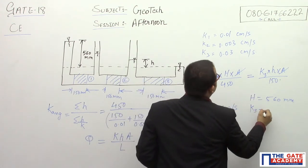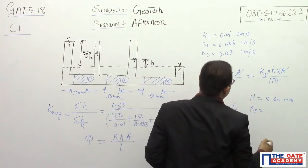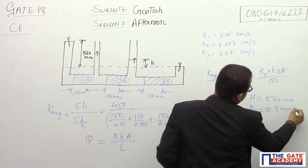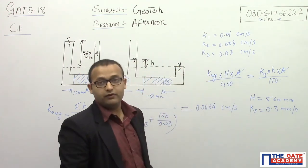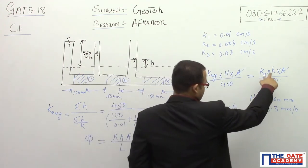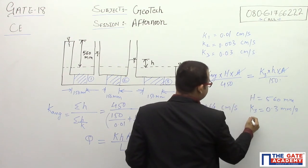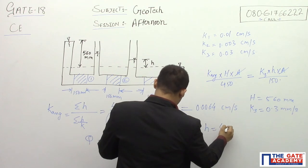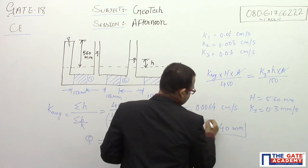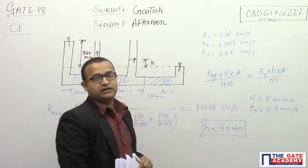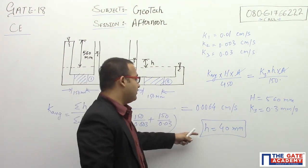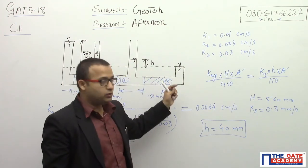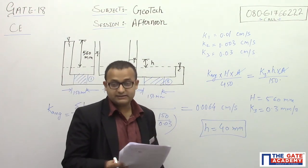K3 is equal to 0.03 cm per second, or 0.3 mm per second. H is what we have to find. Putting all the values in the same units, we get the value of h as 40 mm. That is, the head difference after passing soil number 2 is 40 mm. So for this problem, the answer is option B.